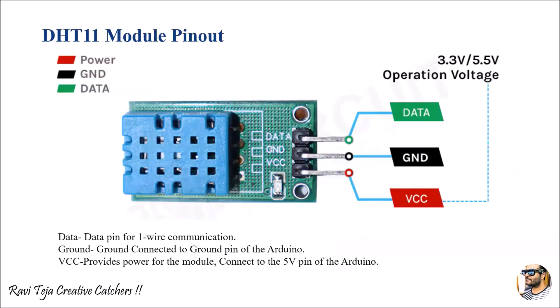The DHT11 module looks like this — it can be from any manufacturer, Chinese or otherwise. It has three pins: one is VCC, one is Ground, and the last one is Data. Sometimes the pin naming may vary slightly depending on the model, but on the whole we will have three pins: VCC, Ground, and Data.